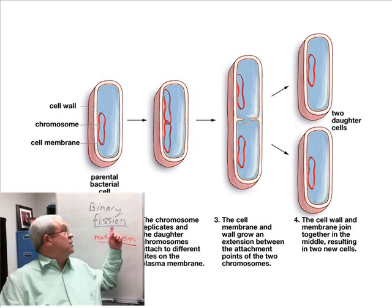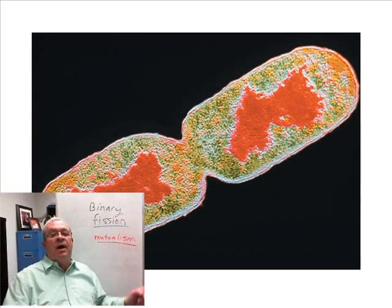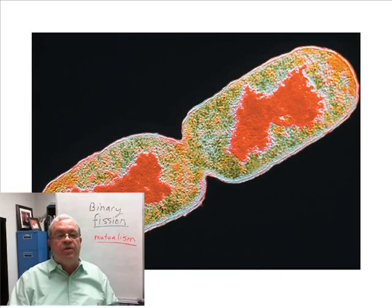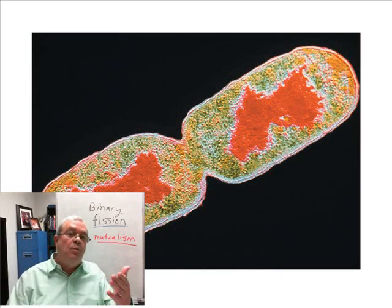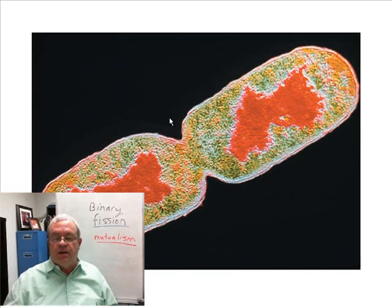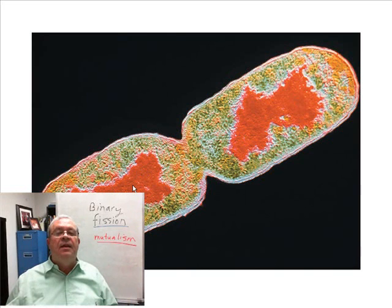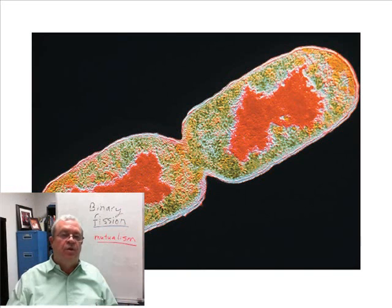It's a process called binary fission. Here's a picture from your textbook showing one bacteria cell almost having split into two. And what is all this red stain stuff in the picture? That would be the one large circular chromosome.